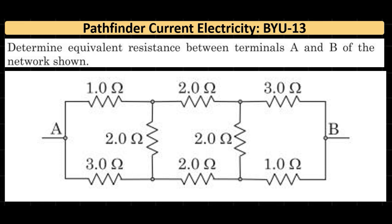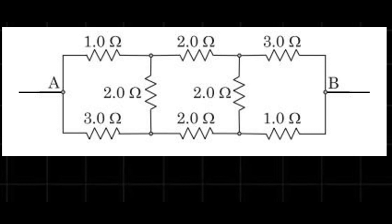As you can see on the screen, there is a circuit and we have to find the equivalent resistance between terminals A and B. We'll solve it using KVL. I want to put a battery between terminals A and B — the positive terminal at A and the negative at B.